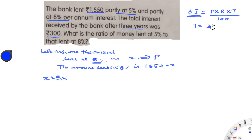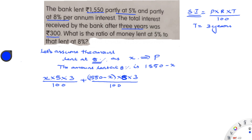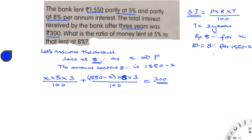T is 3 years because after 3 years they received the interest of 300 rupees. So the equation becomes: x × 5 × 3 / 100 plus (1550 − x) × 8 × 3 / 100 equals 300. Here 1550 − x is the principal for 8%, the rate is 8, and the time is 3 years. Adding these two gives the total interest of 300 rupees.